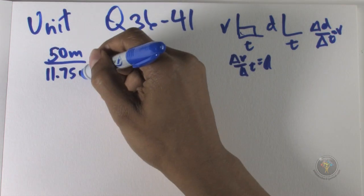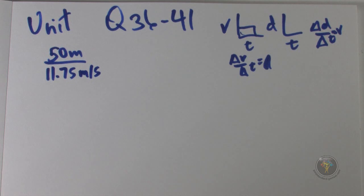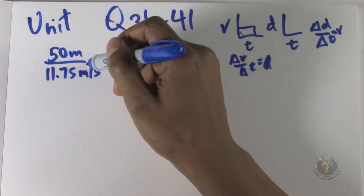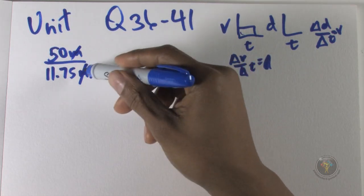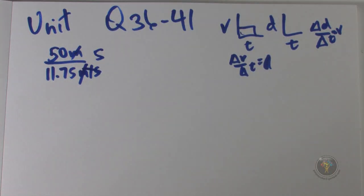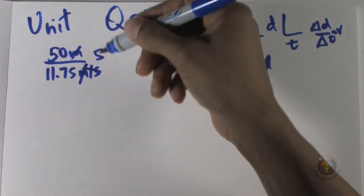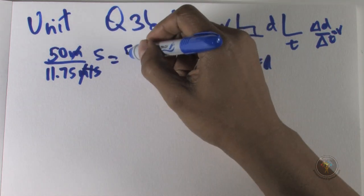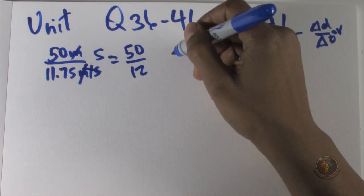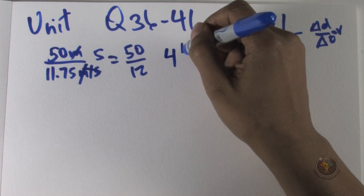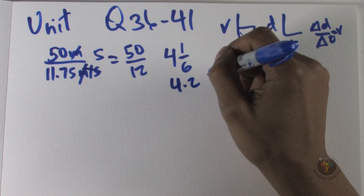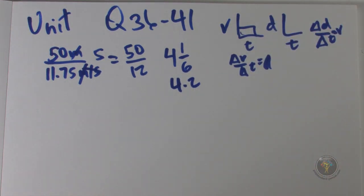So the average velocity over that period is 11.75 — between 11.5 and 12 meters per second. The distance is 50 meters. The meters cancel, leaving seconds in the denominator becoming the numerator. Estimating: 50 over 12, 12 goes into 50 four times giving 48, so we get 4 and one-sixth, which is about 4.2 seconds.